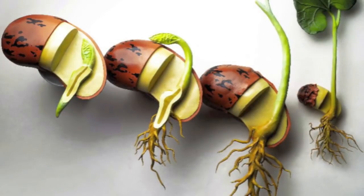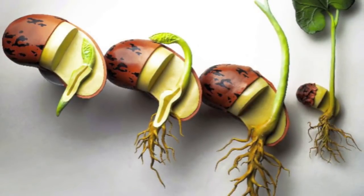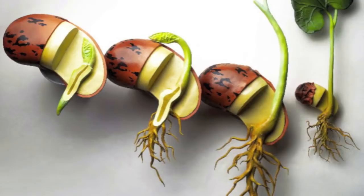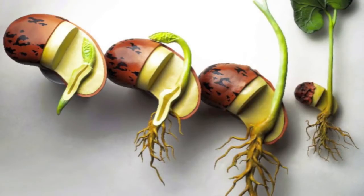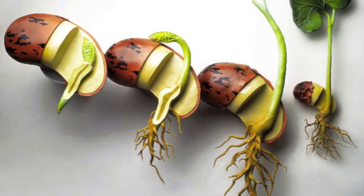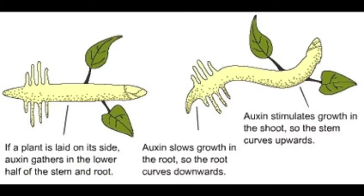Geotropism is the growth response of a plant in response to gravity. Roots exhibit positive geotropism — they grow downwards — while stems and leaves exhibit negative geotropism, meaning they grow upwards.